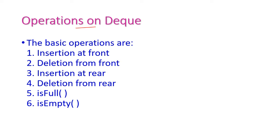Now let us see the operations on DEQ. We will see insertion at front, deletion from front, insertion at rear side, and deletion from rear side — these four are the major operations on DEQ. After that, we will check isempty and isfull, which are used to check whether the DEQ is full or empty.